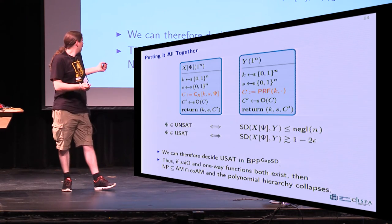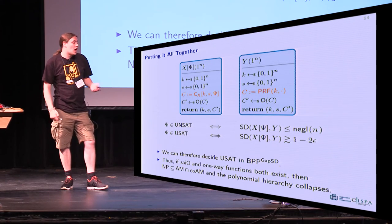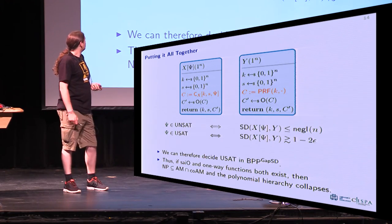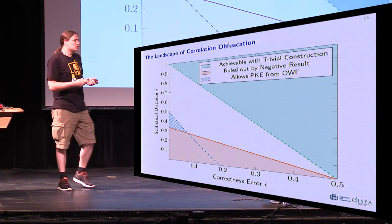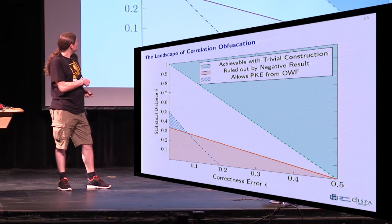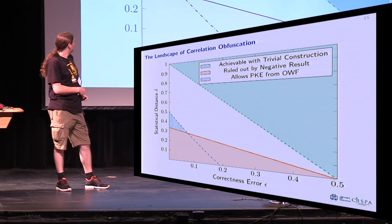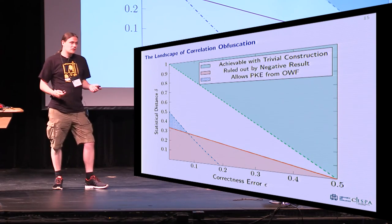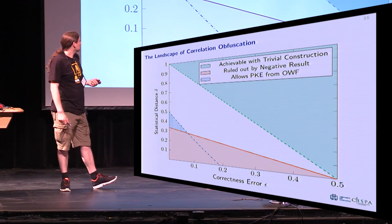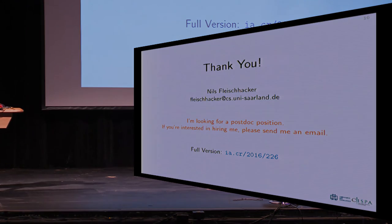And this concludes our proof. If we apply exactly the same proof carefully to correlation obfuscation, we basically end up with the lower bound shown before. I leave you with the interesting open question of whether this bound can actually be extended to also rule out the interesting region, or if there's a reason we can't rule out this region — because maybe an obfuscator in this region actually exists, which would lead to a major breakthrough in crypto. Thank you, and I'd be happy to answer any questions.